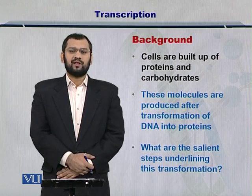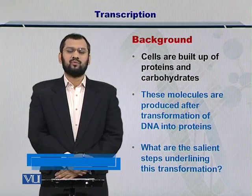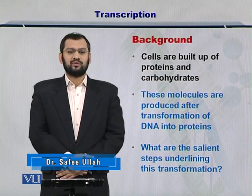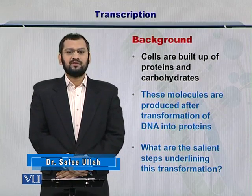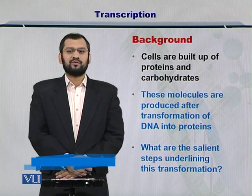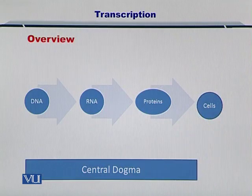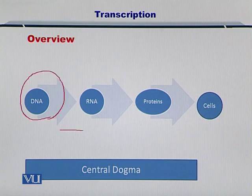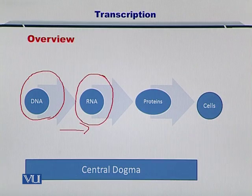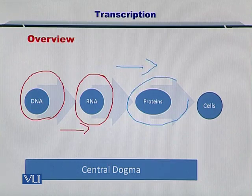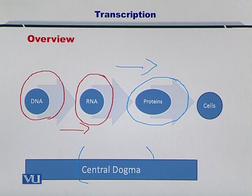In order to form a new cell, the information within the DNA has to be conveyed or converted into proteins. In this figure, you can see that the DNA is coding for an RNA. This process is followed by encoding of the RNA into the proteins.